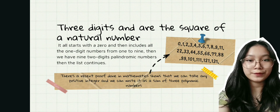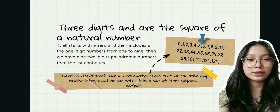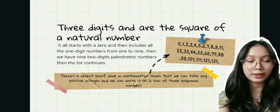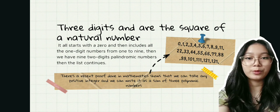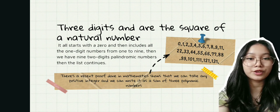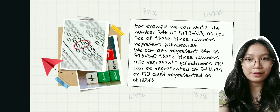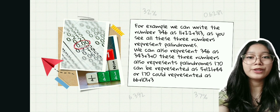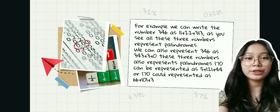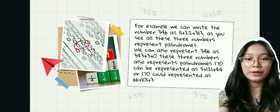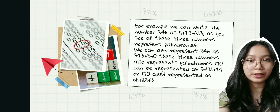There's a recent proof done in mathematics that shows we can take any positive integer and write it as a sum of three palindromic numbers. For example,